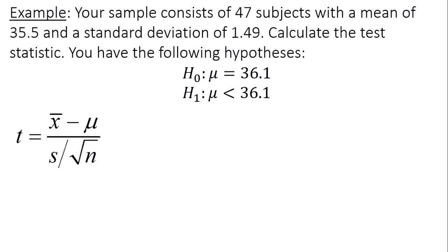Your sample consists of 47 subjects with a mean of 35.5 and a standard deviation of 1.49. Calculate the test statistic. You have the following hypotheses. The null hypothesis H0 is mu equals 36.1. The alternative hypothesis H1 is mu is less than 36.1.